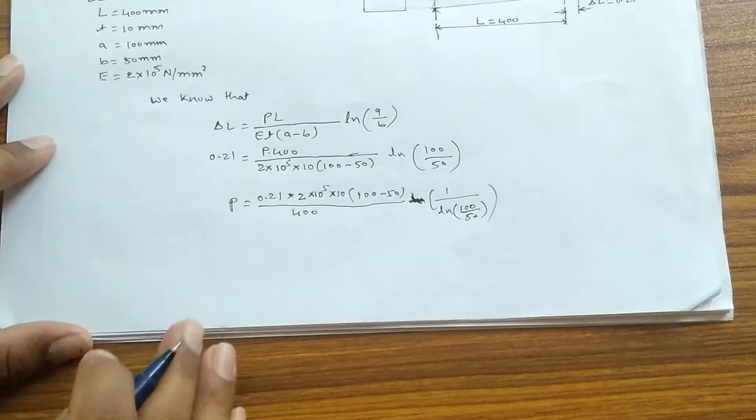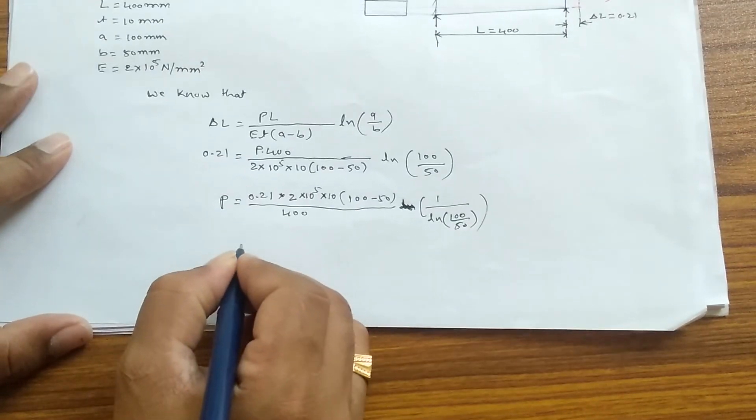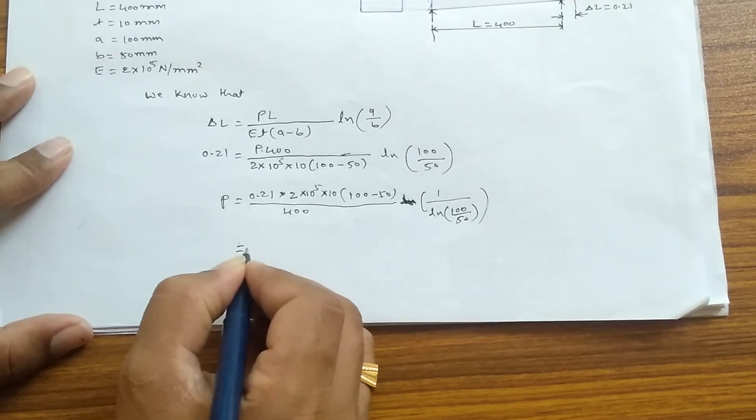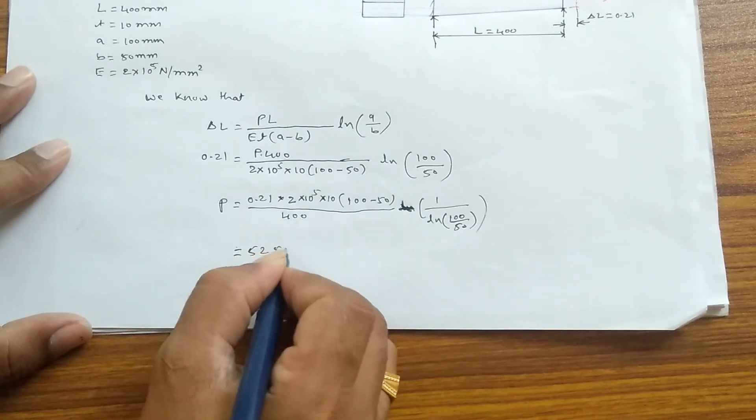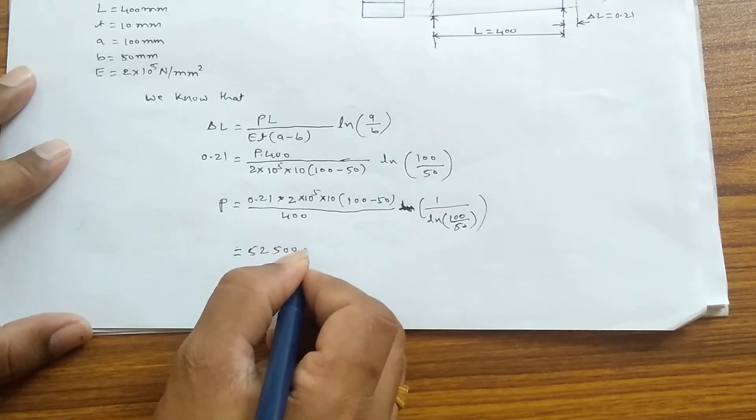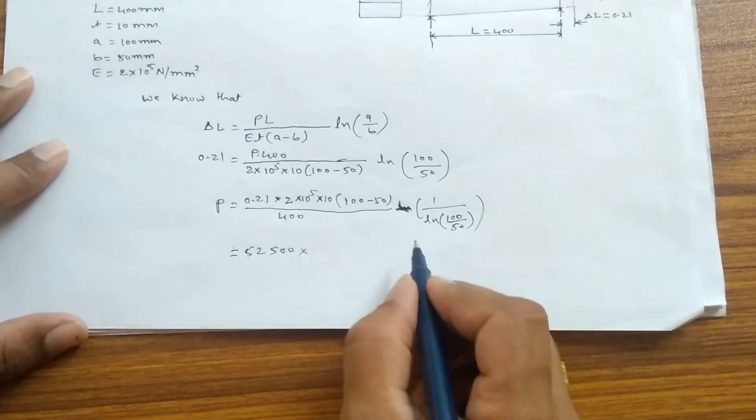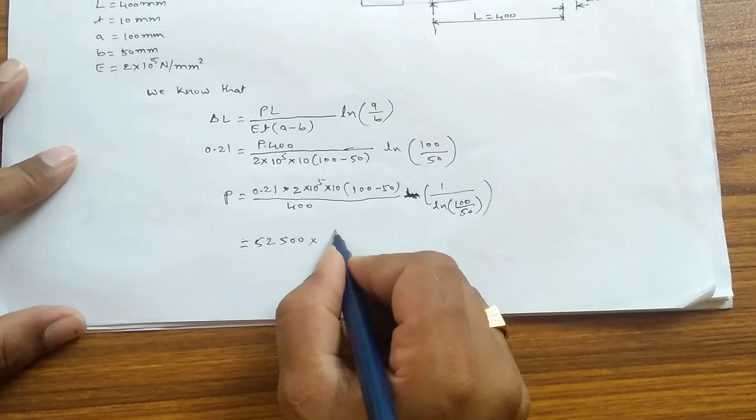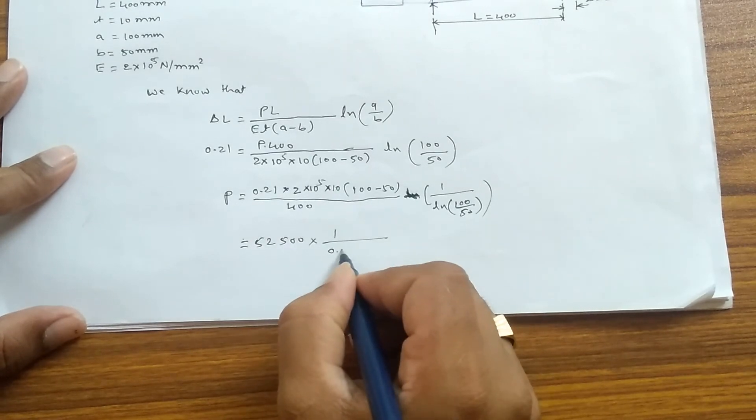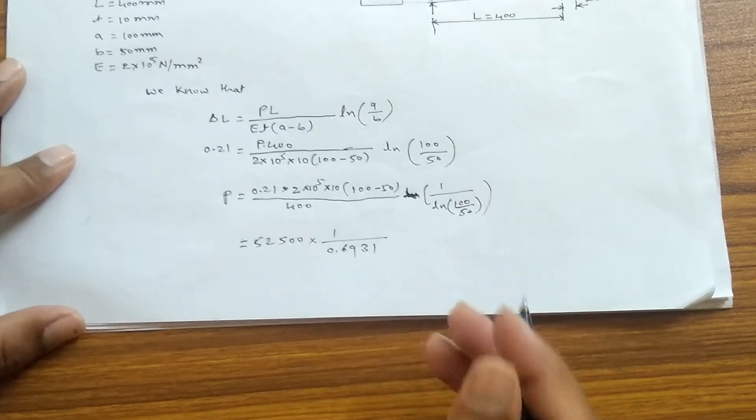Then again by simplifying this, we will be getting the value of P to 500 × ... and this value, this one by ln, can be written as 0.6931.